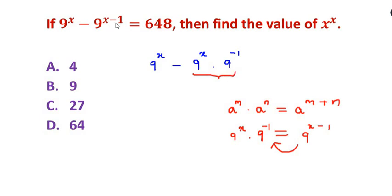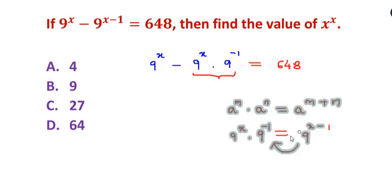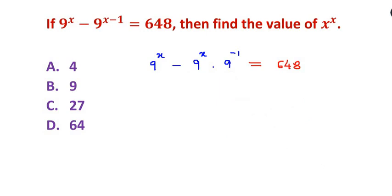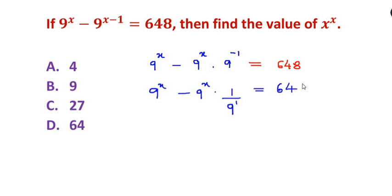So we have 9^x minus 9^x times 9^(-1), equal to 648. Now, 9 to the power of minus 1 can be written as 1 over 9, using the laws of indices — when you take 9 to the denominator, the negative power becomes a positive power.